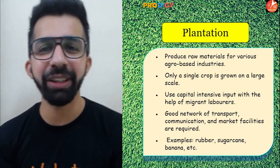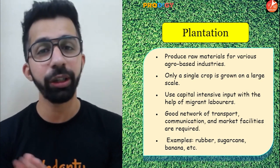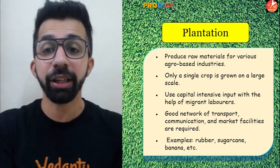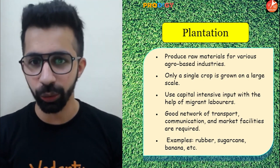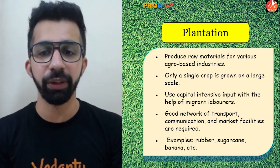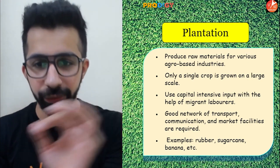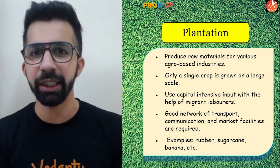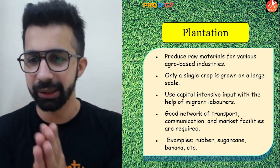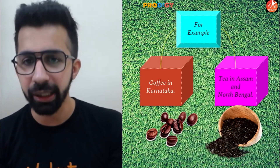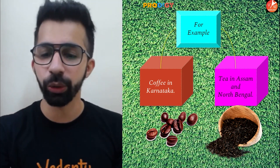Finally, we have plantation farming, which is different from commercial farming. In plantation farming, raw materials are produced for various agro-based industries. Only a single crop is grown on a large scale. It uses capital-intensive inputs — meaning a lot of machines are used along with migrant laborers. It requires a good network of transport, communication, and market facilities. Crops grown include rubber, sugarcane, banana, coffee in Karnataka, and tea in Assam and North Bengal.